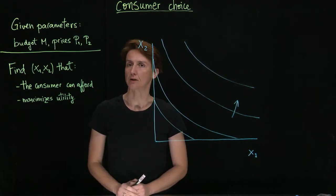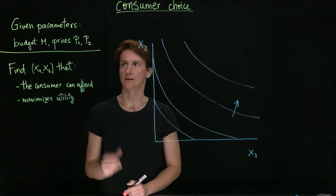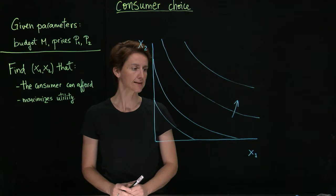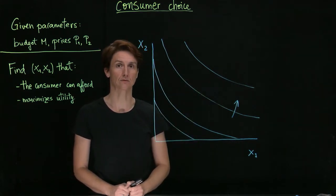The consumer faces certain parameters in the market: budget M and prices of the goods they're interested in, and has certain preferences, which here are illustrated by a few indifference curves.